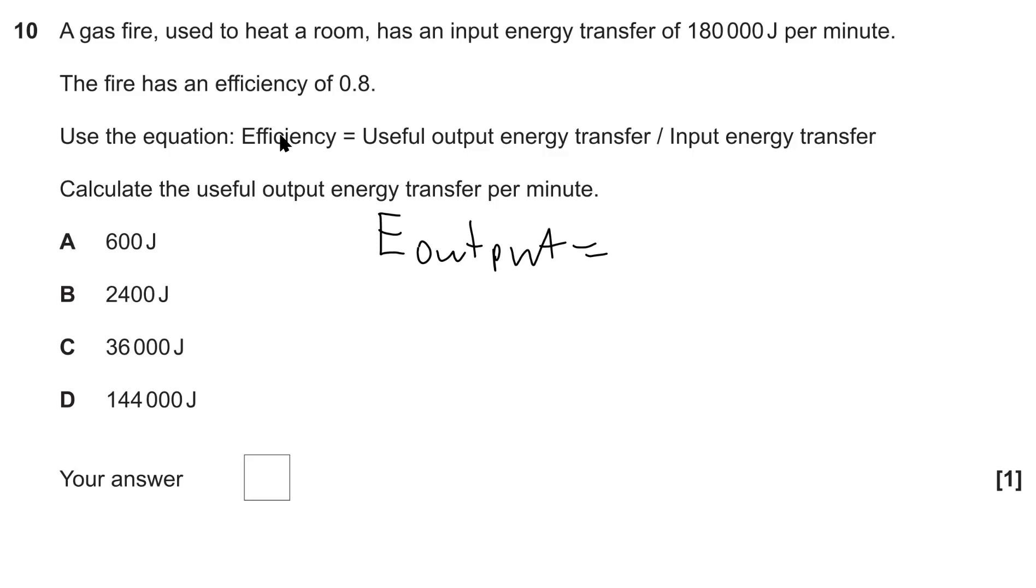Our efficiency is 0.8, and we're just going to multiply by the input energy transfer, which in this case is 180,000 joules. So if we put that into a calculator, we're going to get around about 144,000 joules. The correct answer is D.